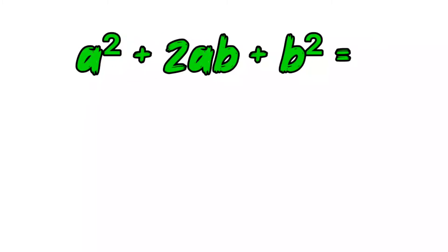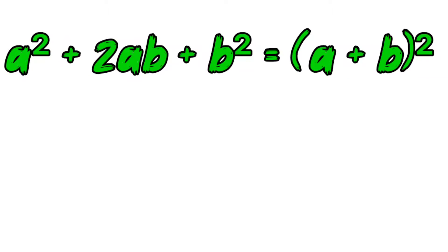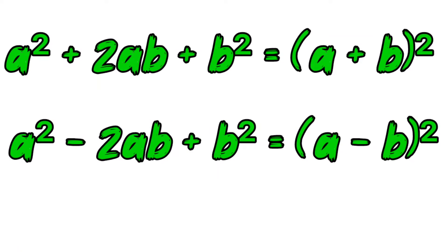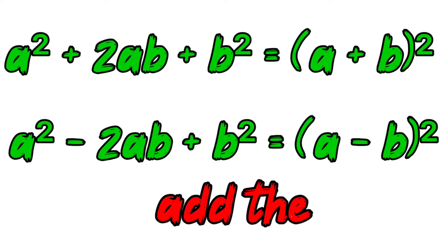A square plus 2AB plus B square is equal to A plus B whole square. A square minus 2AB plus B square is equal to A minus B whole square.